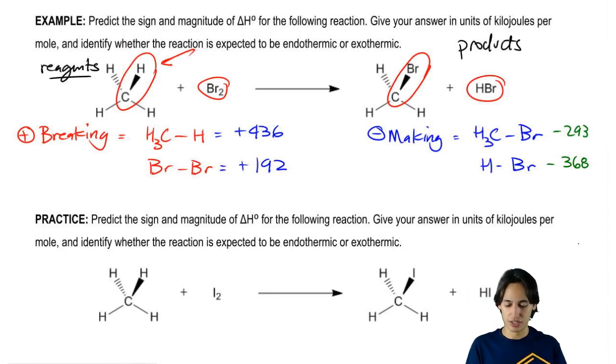I've got my calculator here. Let's go ahead and enter these values. I have 436 plus 192 minus 293 minus 368.